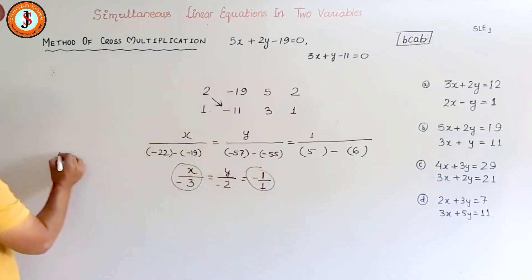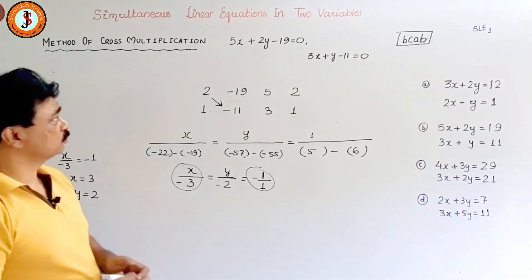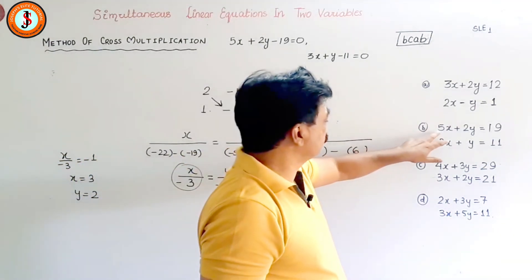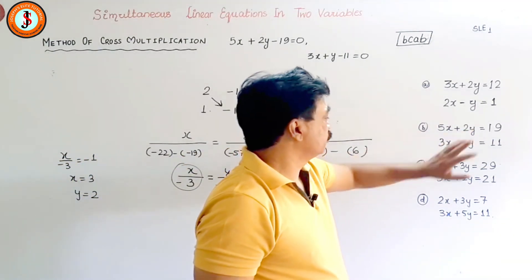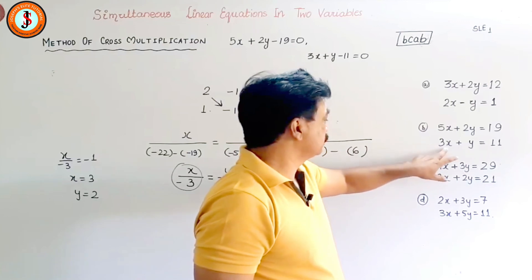So when you solve this, x minus 3 is equal to minus 1, so x will be equal to 3. And y will be equal to 2. So x is equal to 3 and y is equal to 2. Let us try to put over here: 5 times 3 is 15, 4, 19. 3 times 3 is 9, and 2, 11.